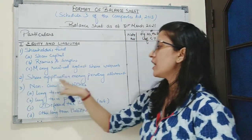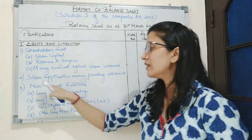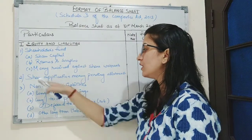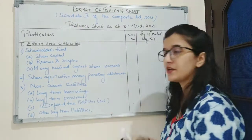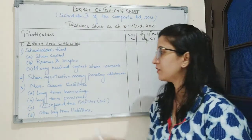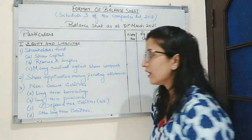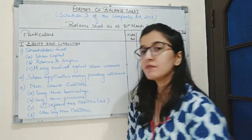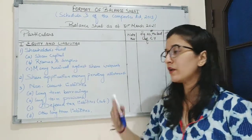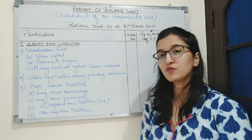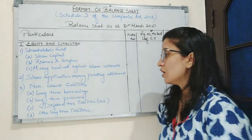The second part is share application money pending allotment. In this, the company is receiving only application money and has not allotted the shares yet. Third is non-current liabilities. Non-current liabilities means the liabilities which have to be paid after the operating cycle — which means the liabilities which have to be paid after a period of one year.